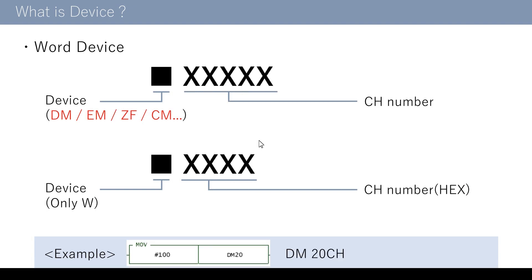In the case of the word device, the numeral value indicates the channel number directly. There are the following device names: DM is the one in which the unit function is allocated; EM and ZF store data in the program; and the PLC system data is allocated in CM. DM20 is the 20th channel of DM. However, for the device called W, used for Ethernet IP communications, all numbers indicating the channel number are hex numbers, such as WFF.